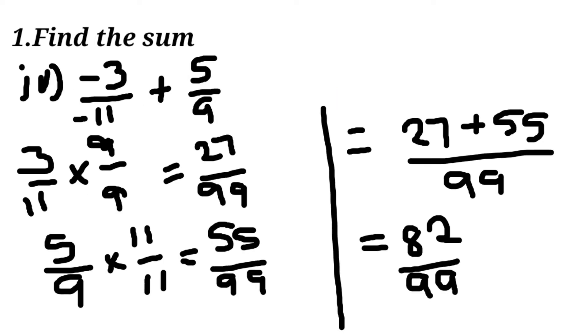Fourth sum: minus 3 by minus 11 plus 5 by 9. Here LCM is 99 and then we take equivalent fractions and we add, we get 82 by 99.